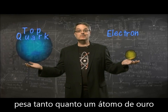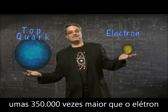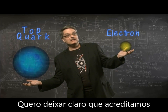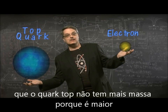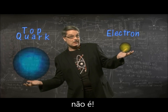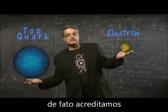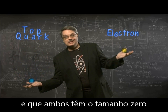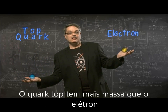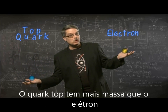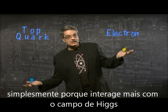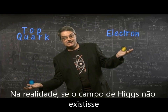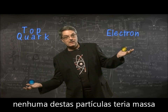The top quark weighs about as much as an entire atom of gold, about 350,000 times more than the electron. I'd like to stress that we believe the top quark is not more massive because it's bigger — it's not. In fact, we believe that both the top quark and the electron are exactly the same size. Indeed, they both have zero size. The top quark is more massive than the electron simply because it interacts more with the Higgs field. Actually, if the Higgs field didn't exist, neither of these particles would have any mass at all.